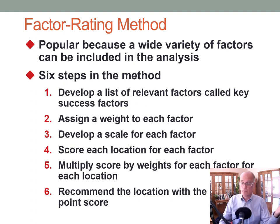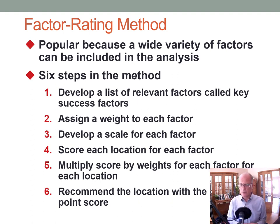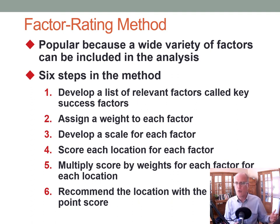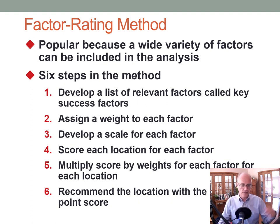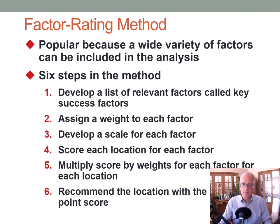The factor rating method has six steps. First, determine key success factors. Second, assign weights to indicate how important each factor is — some may be twice as important as others. Third, develop a scale to measure each factor, for example 1 to 10, where higher is better. Fourth, score each location relative to each factor. Fifth, multiply each score by its weight to get a weighted score. Sixth, recommend the location with the best total weighted point score.